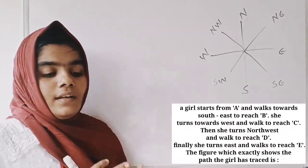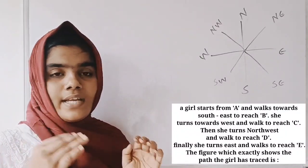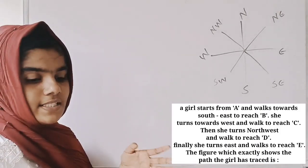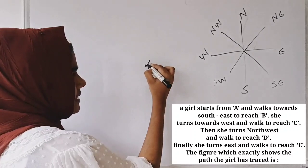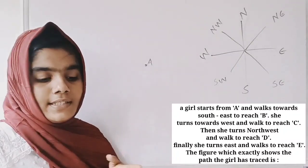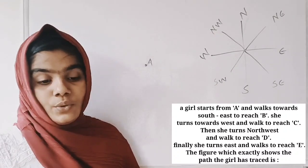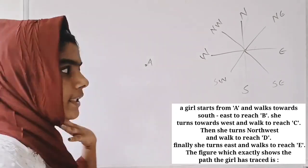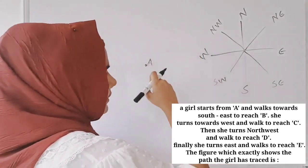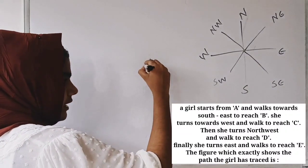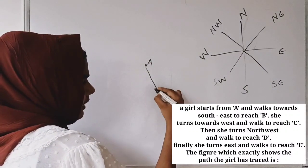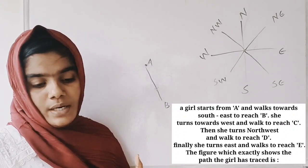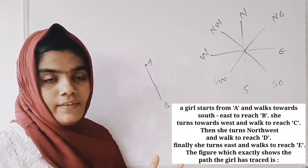One girl starts from point A. She walks towards South-East to reach B. Then she turns towards West and walks to reach C. She then goes along the West road.